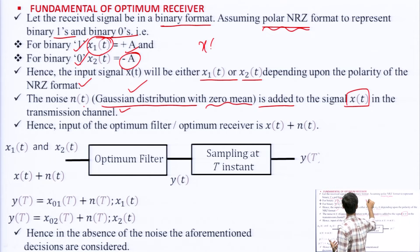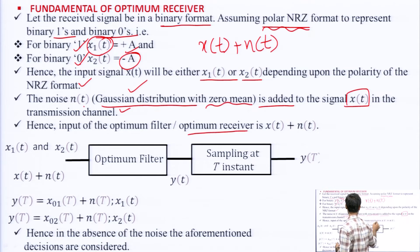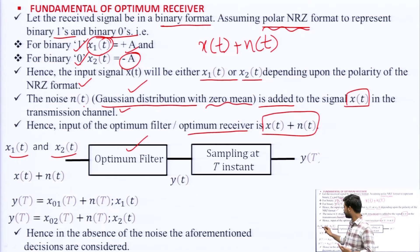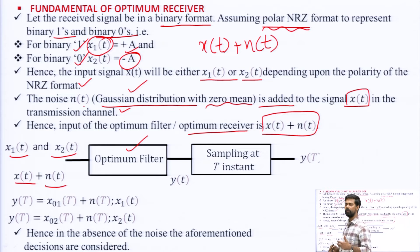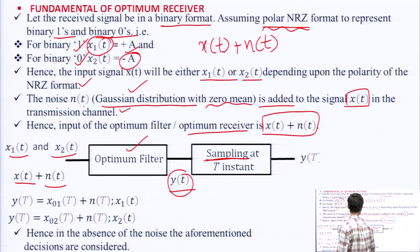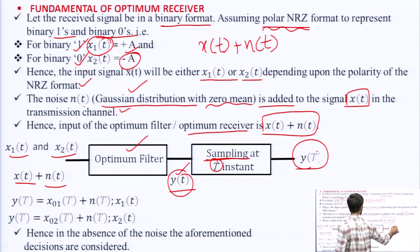So the signal is now x(t) + n(t). Hence the input of the optimal filter or optimum receiver is x(t) + n(t). The optimum filter processes this input signal and gives an output y(t). In digital communication, we find the sampled version of y(t), sampled at instant T, giving y(T).